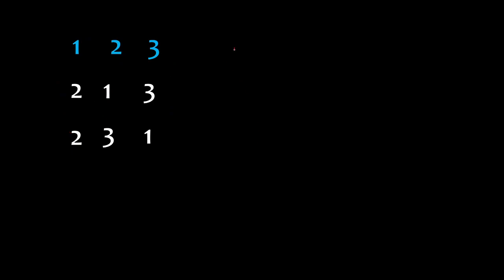1, 2, and 3 can be arranged in 3 factorial ways. 3 factorial is basically 3 times 2, which is 6 ways. So you can have 6 sequences. Out of them, how many are derangements in which none of the numbers are at their right places?